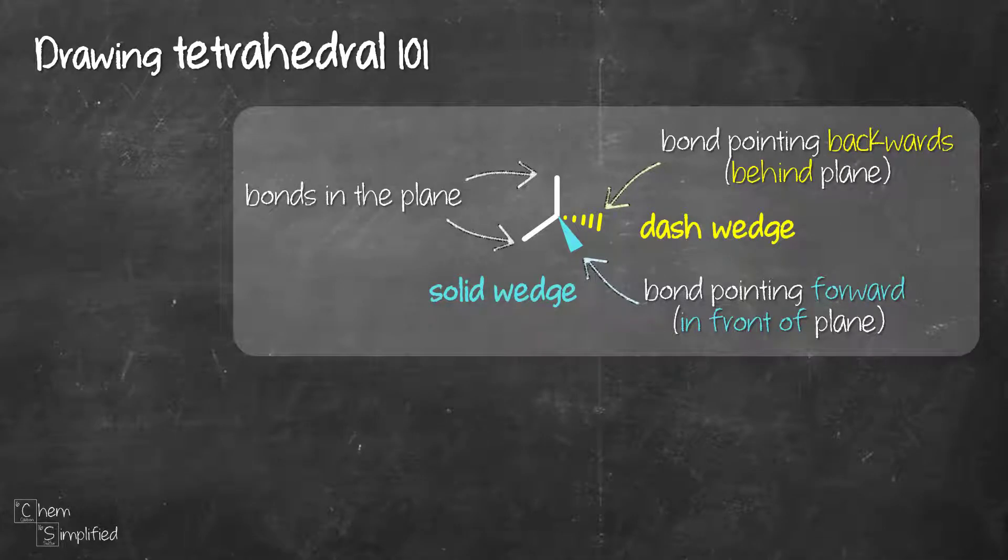Now if you look closely, tetrahedral is like having two V's perpendicular to each other.